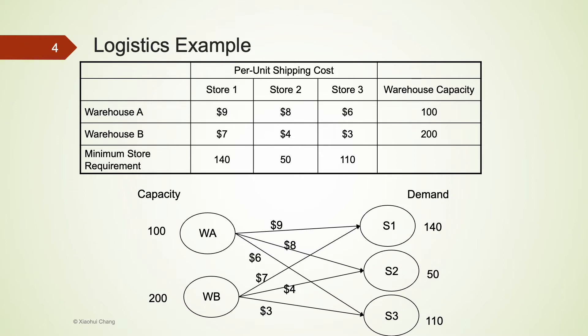We use a graph to visually present all the information from the table to the graph. The circles on the left are the warehouses, while the circles on the right are the stores. We have also included their respective warehouse capacity and also store requirement on this graph. The per unit shipping costs are also shown on the graph.